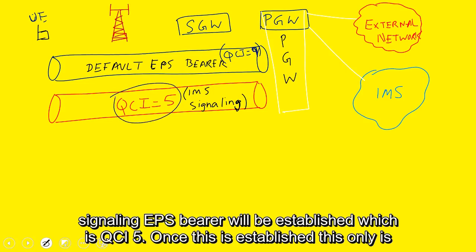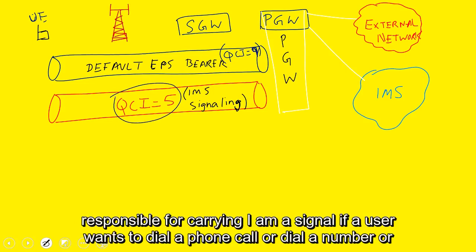Once this is established, this is responsible for carrying IMS signaling. If a user wants to dial a phone call or dial a number or anything like this,